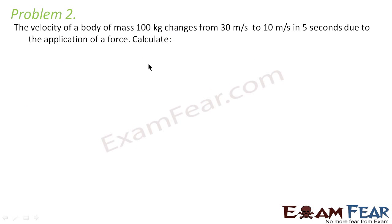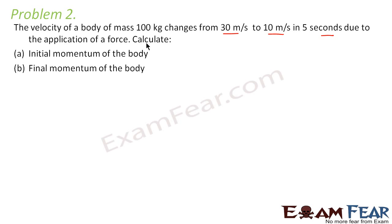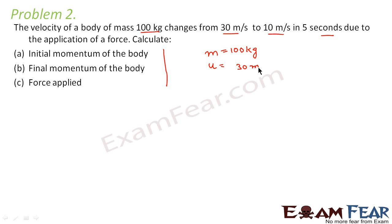The next problem says: the velocity of a body of mass 100 kg changes from 30 m/s to 10 m/s in 5 seconds due to the application of a force. Calculate the initial momentum of the body, the final momentum of the body, and the force applied. Mass of the body = 100 kg, initial velocity u = 30 m/s, final velocity v = 10 m/s, and time t = 5 seconds.